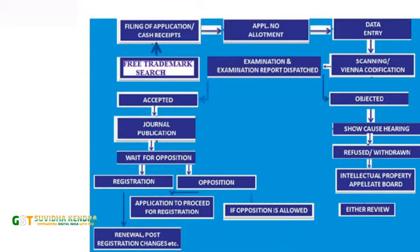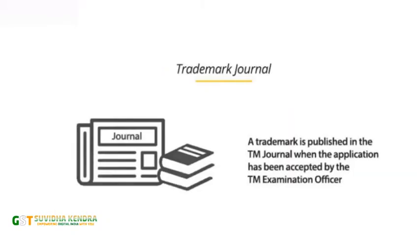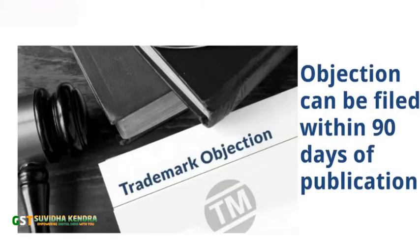The application is then examined by the Registrar of Trademark. If the examination is found satisfactory, the trademark is published in the Trademark Journal, which is published on a weekly basis. Any person who has an objection to the trademark can apply for their objection within a period of 90 days from the date of its publication.